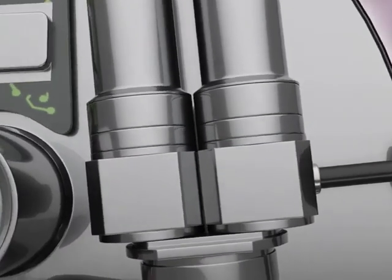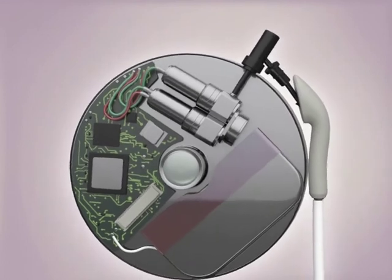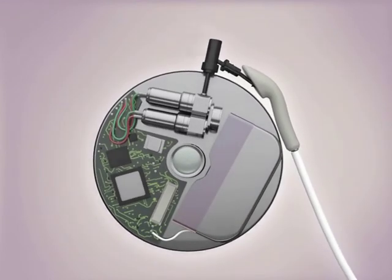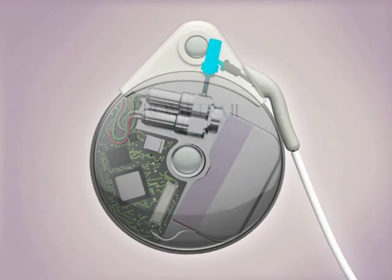After the medication leaves the PDS and FAV, the medication then travels from the pump stem to the catheter, where it will then be delivered to the intrathecal space.